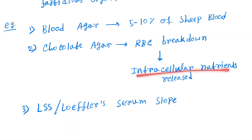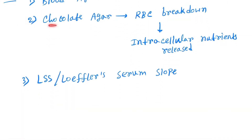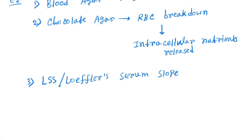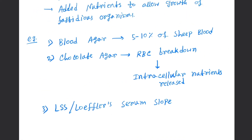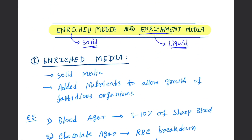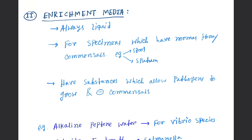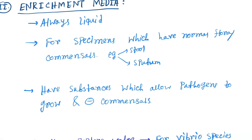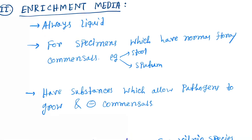When RBCs break down in chocolate agar, intracellular nutrients are released. The next example of enriched media is LJ — Löwenstein-Jensen serum slope.